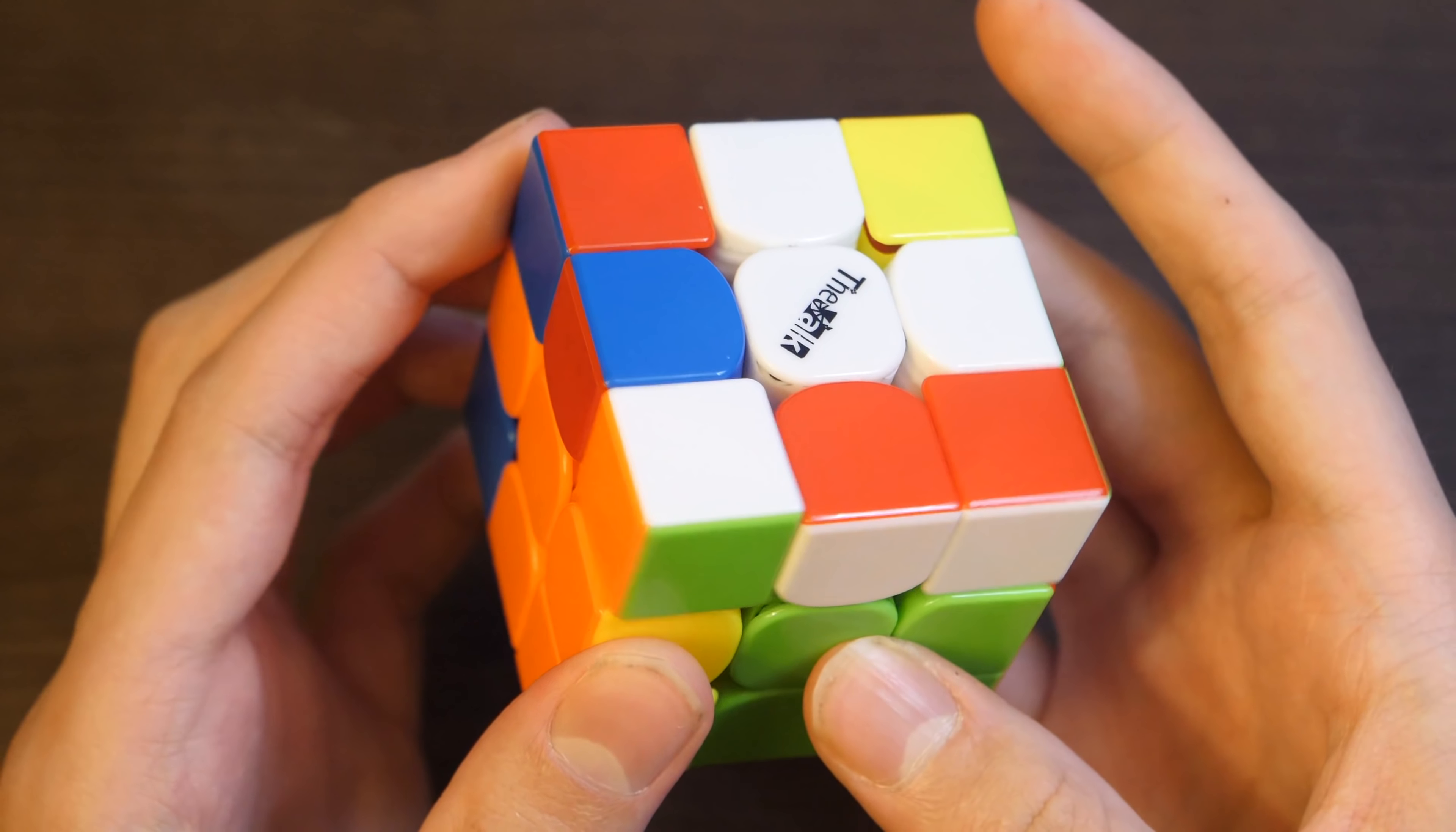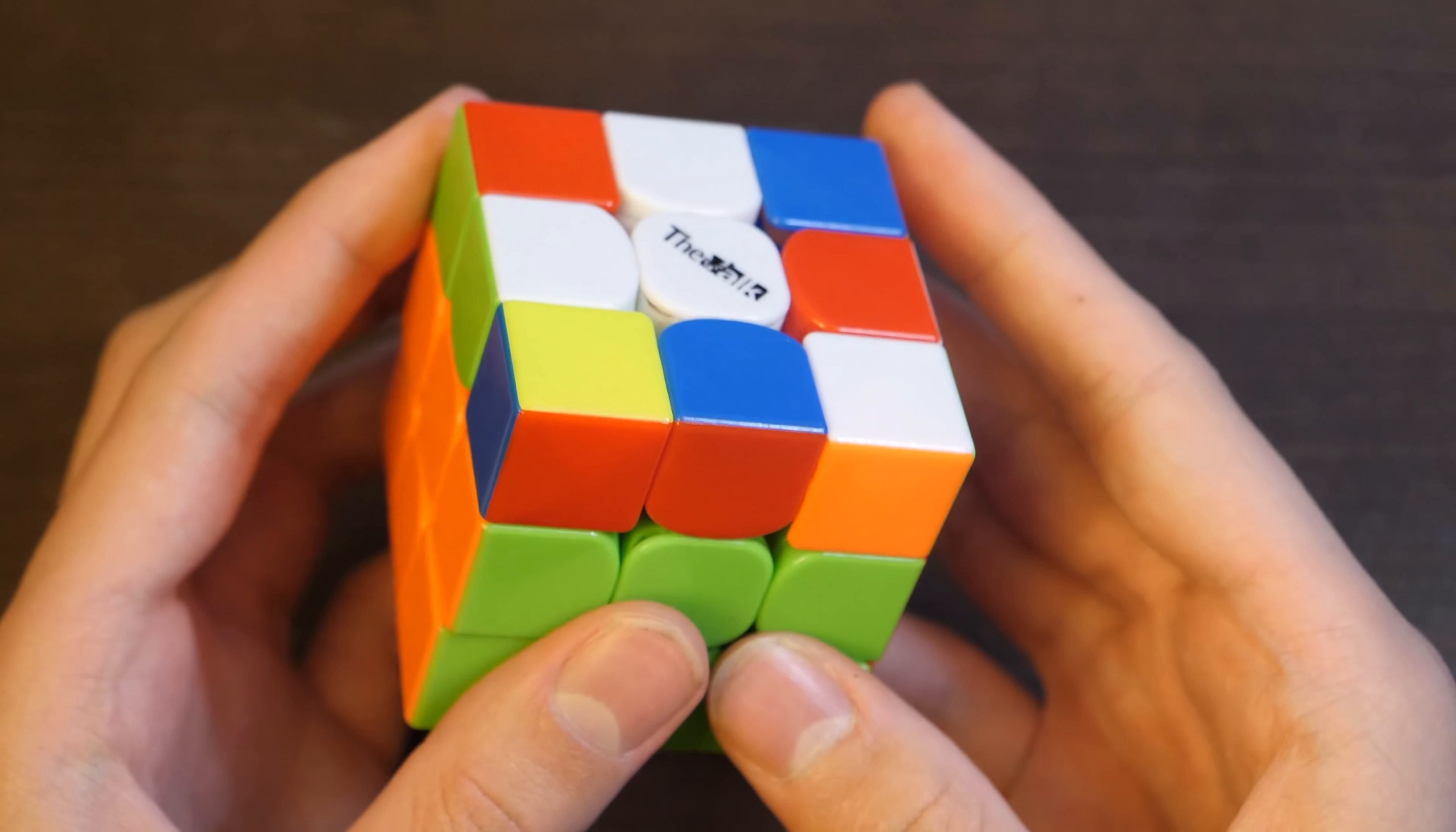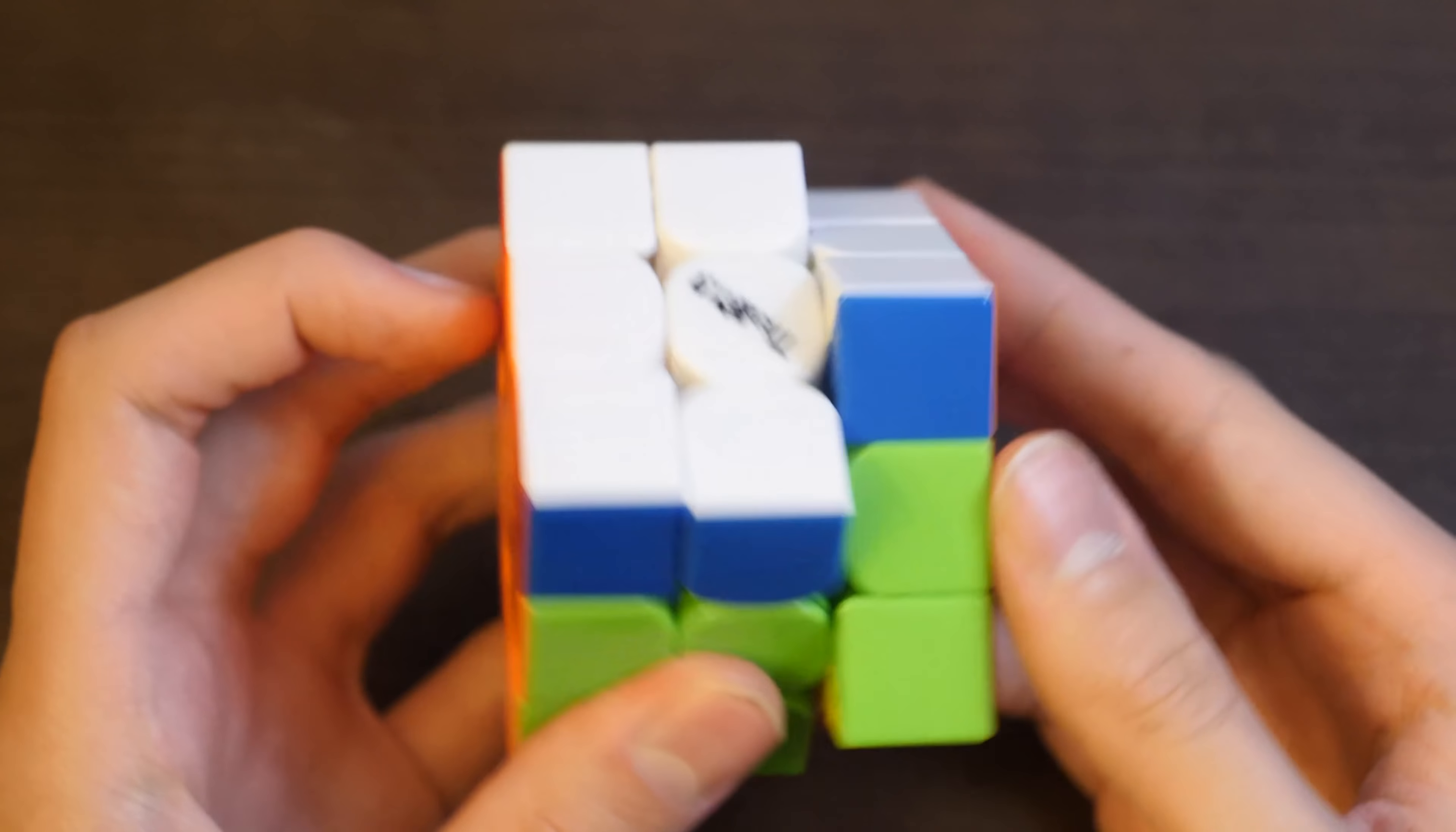But anyways, he solves these two. And here he probably should have done a U2 prime before inserting this pair. In the solve, he did this, which gives him this case. It's got, luckily, a pretty easy solution to solve into the back. But if he had done an extra U prime here, he gives himself a really fast three move insert. And so that's what I think he should have done. Instead he did this, and then he's got to know this back insert for that very specific case, which he did. And now he did OLL, which happens to permute corners, but I'm not sure that really matters here. And now he's got an easy PLL.